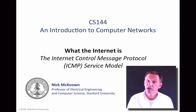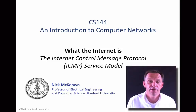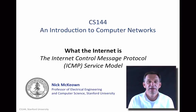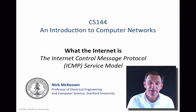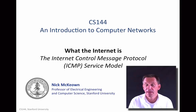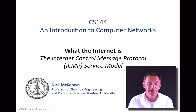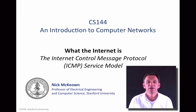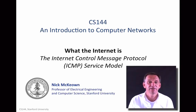In this video, I'm going to continue the topic of the 4-layer internet model, and I'm going to tell you about the ICMP service model. ICMP is the Internet Control Message Protocol, and it's used to report errors and diagnose problems with the network layer. IP doesn't provide any guarantees about delivery, but ICMP gives us valuable hints and information back from the network layer about when things are going wrong.